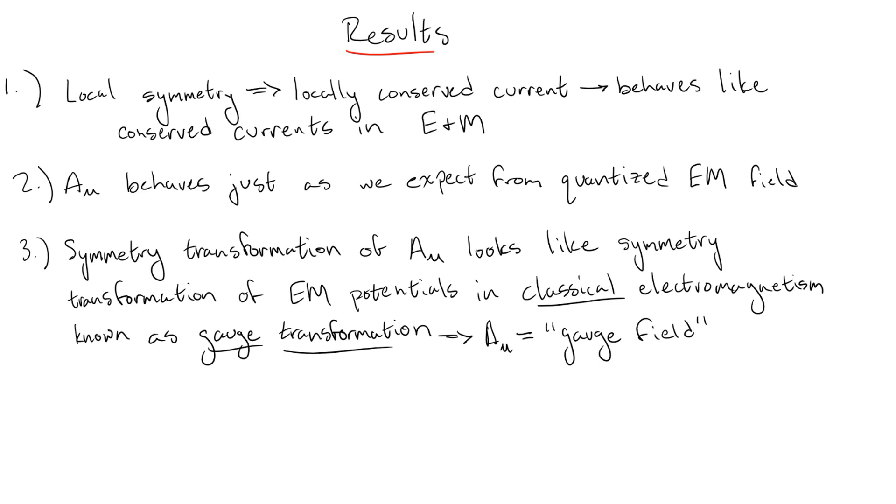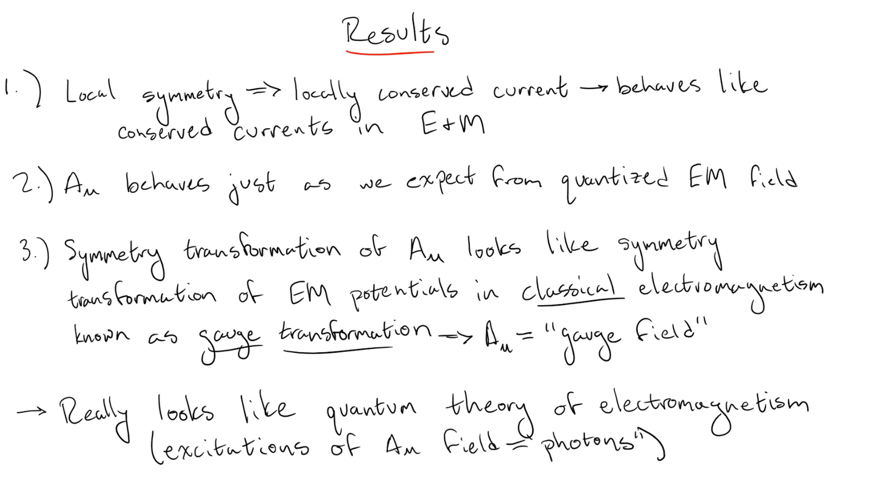For this reason, this type of field that we add in specifically to cancel off the leftover pieces of a local transformation is known as a gauge field. In this particular case, the particles associated to the gauge field are known as photons.